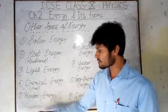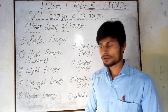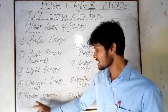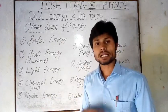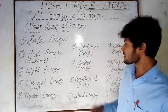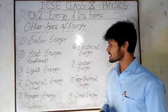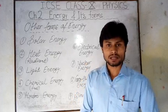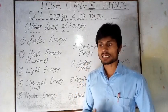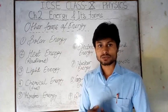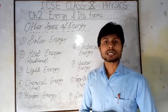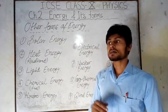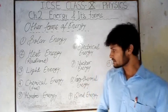Hydro energy — by the name you can understand — is the energy of running water. Running water has kinetic energy and this is called hydro energy, mostly used for electricity generation. Electrical energy: the motion of charged particles like electrons and protons, which have the property of attraction and repulsion, causes electrical energy. Electrical appliances such as fans run on electrical energy.